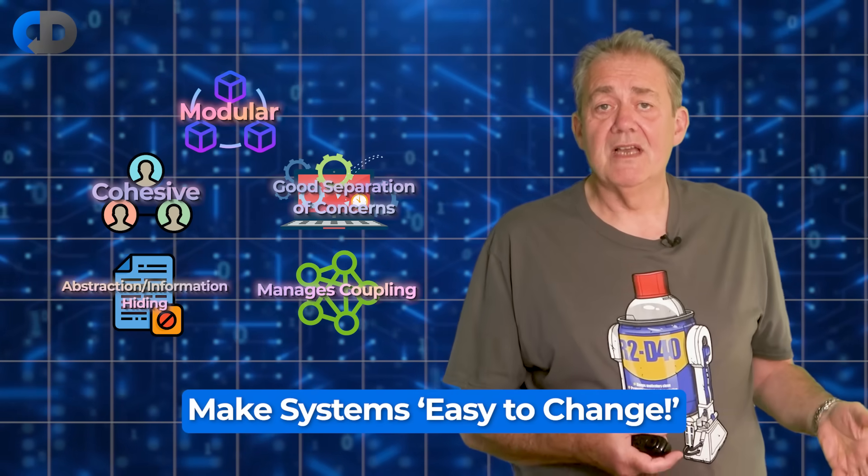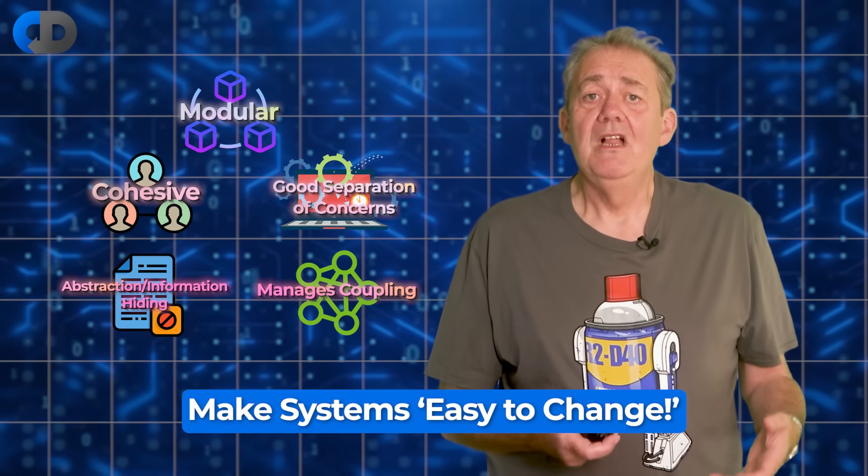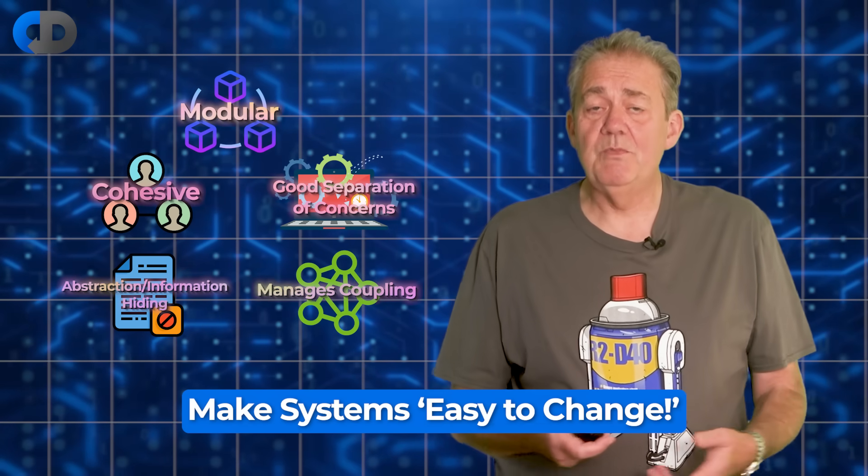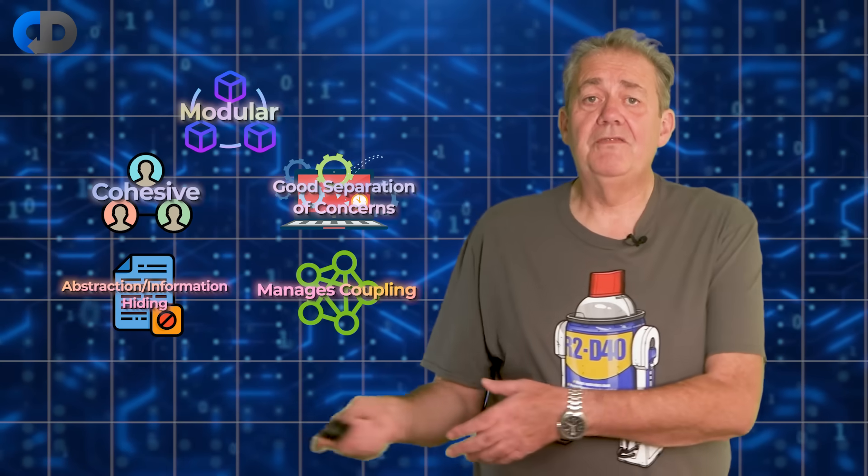We compartmentalize our systems into coherent, sensibly bounded parts with clearly defined interfaces between those parts, so that we can make a change in one part of the system without forcing change on any other part. This, and only this really, is what microservices are really there for.